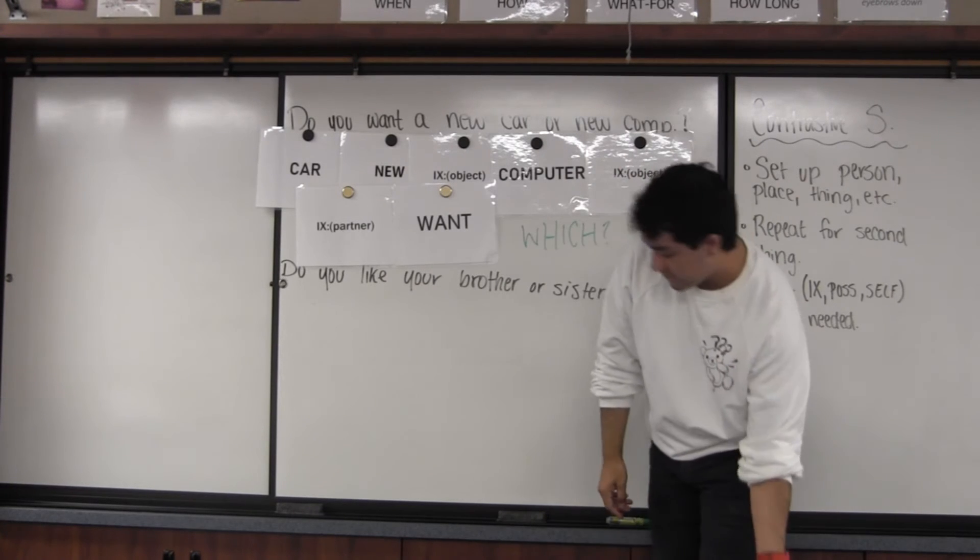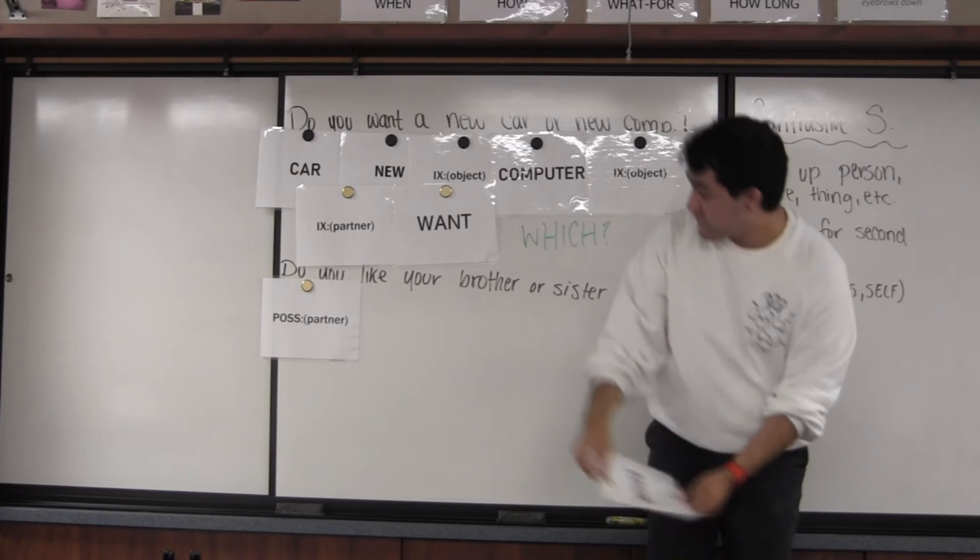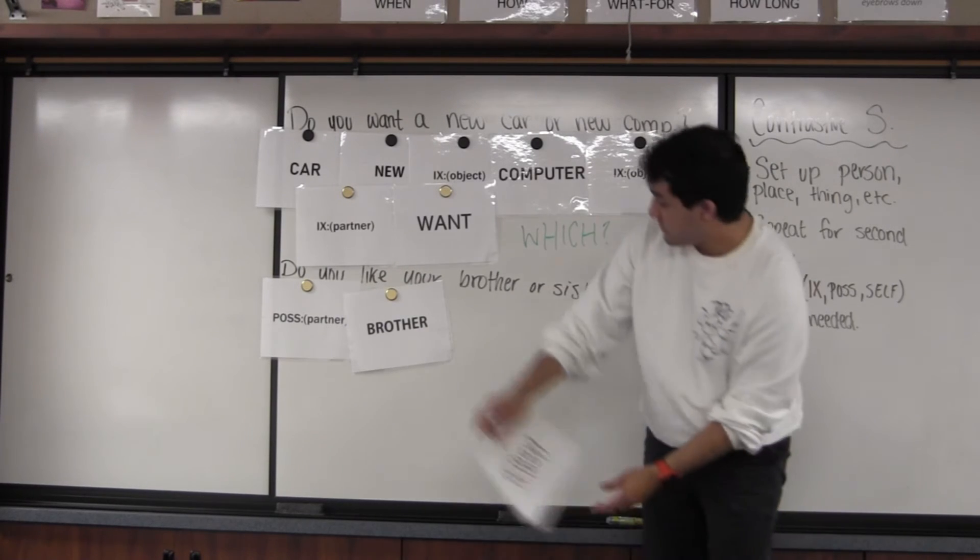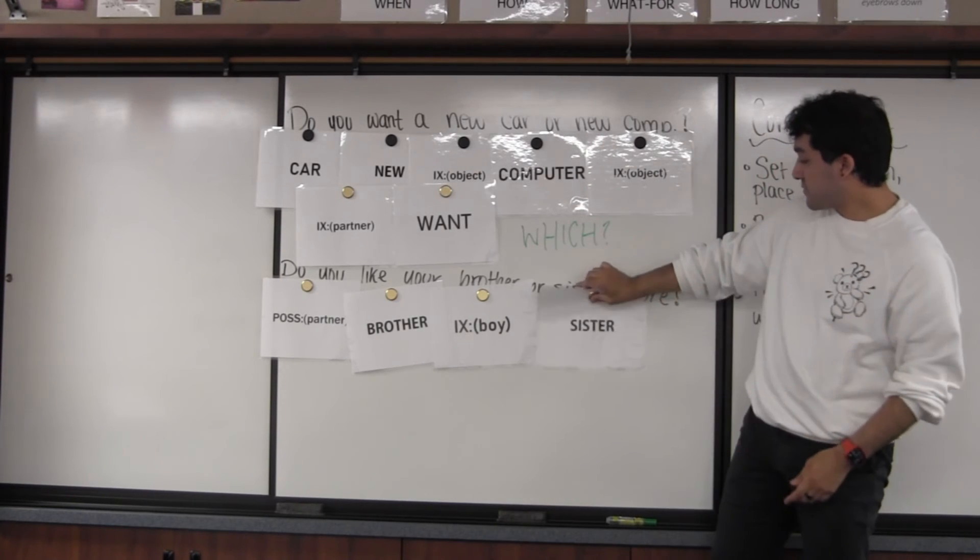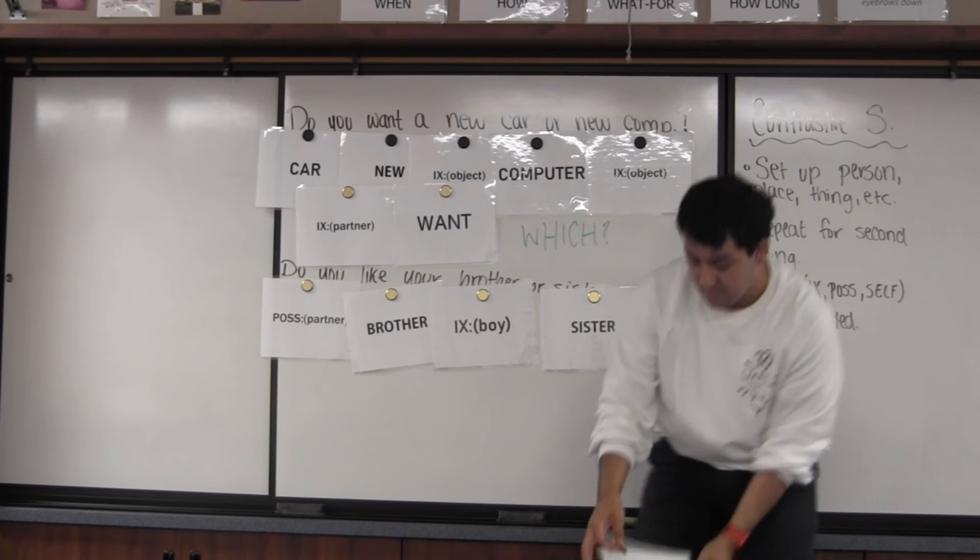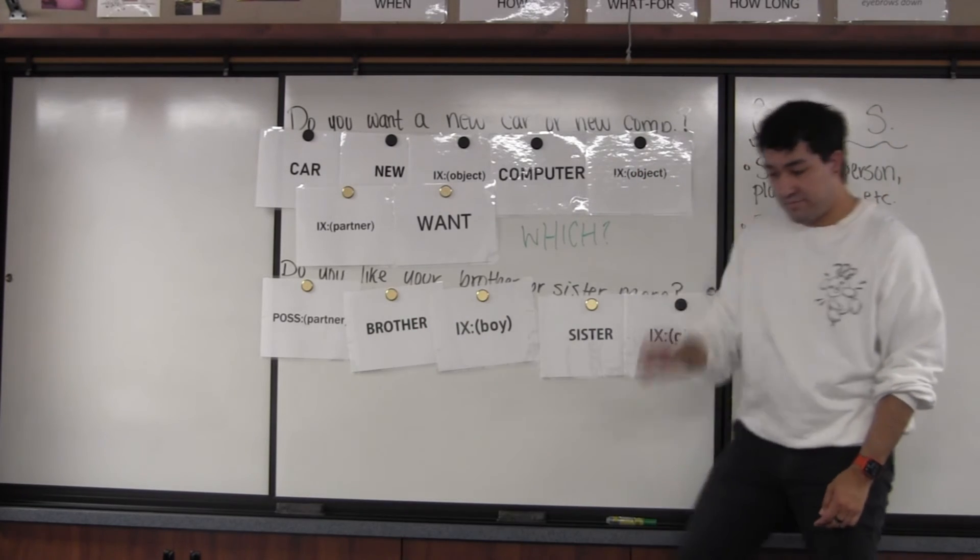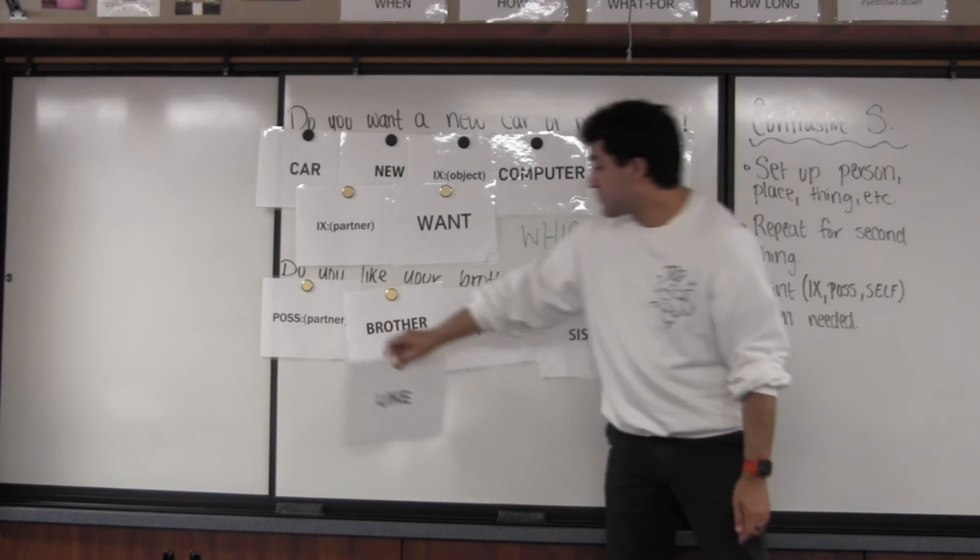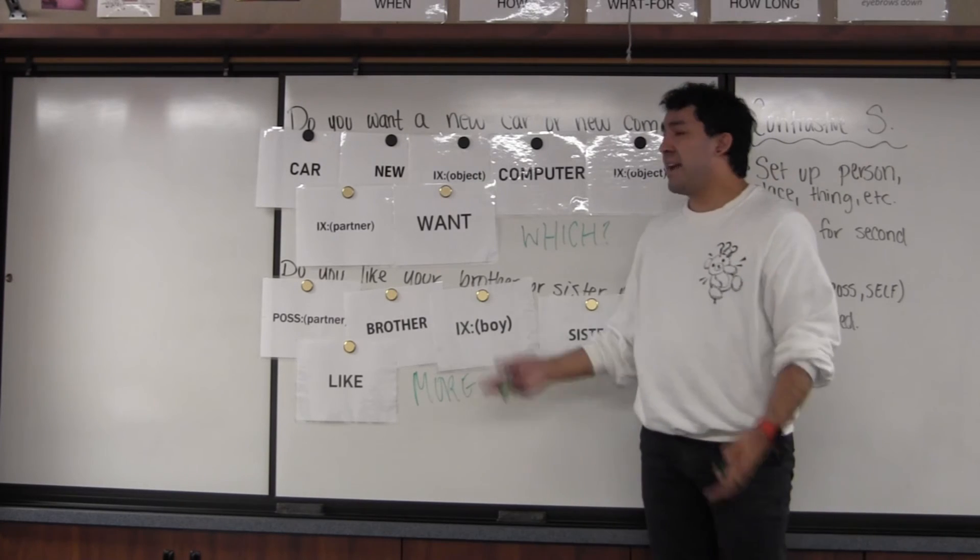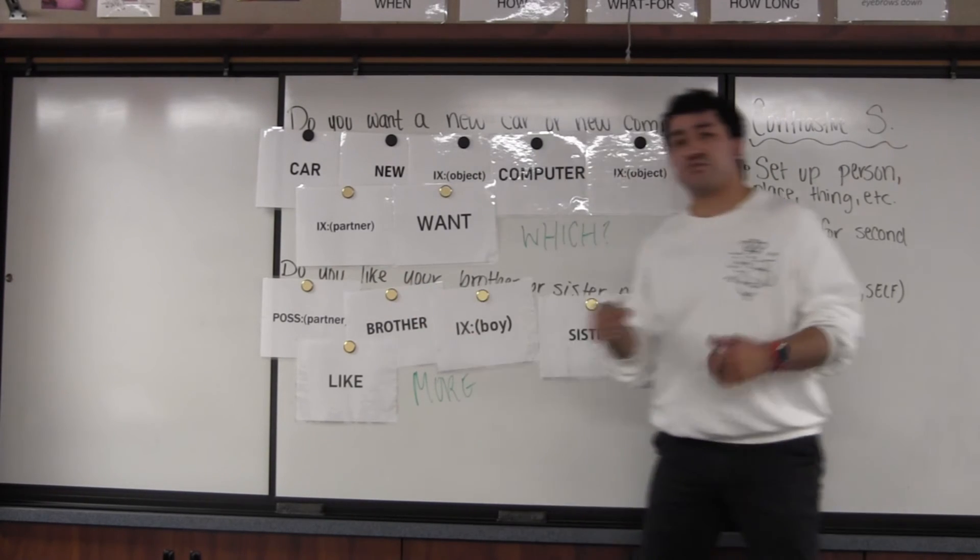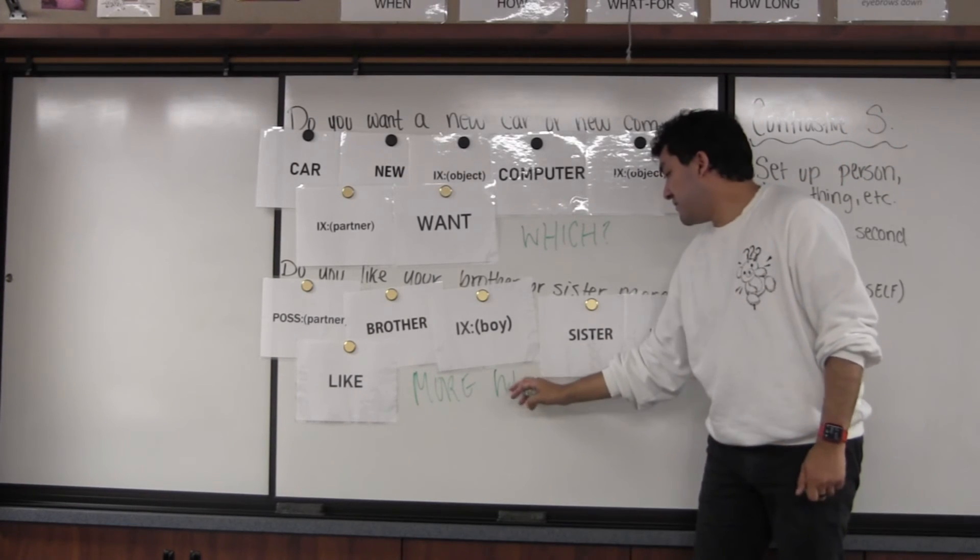And so we have your brother or sister. So again, it's going to be somebody else. It's not me. It's asking some theoretical third person. So your brother, set them up. And now the sister. And again, I don't have another possessive partner card. And then we have like more. And again, we have another which one. And I don't have a sign for more, or again, the sign for which though. You like which one more. So we'll just go ahead and add which at the very end.